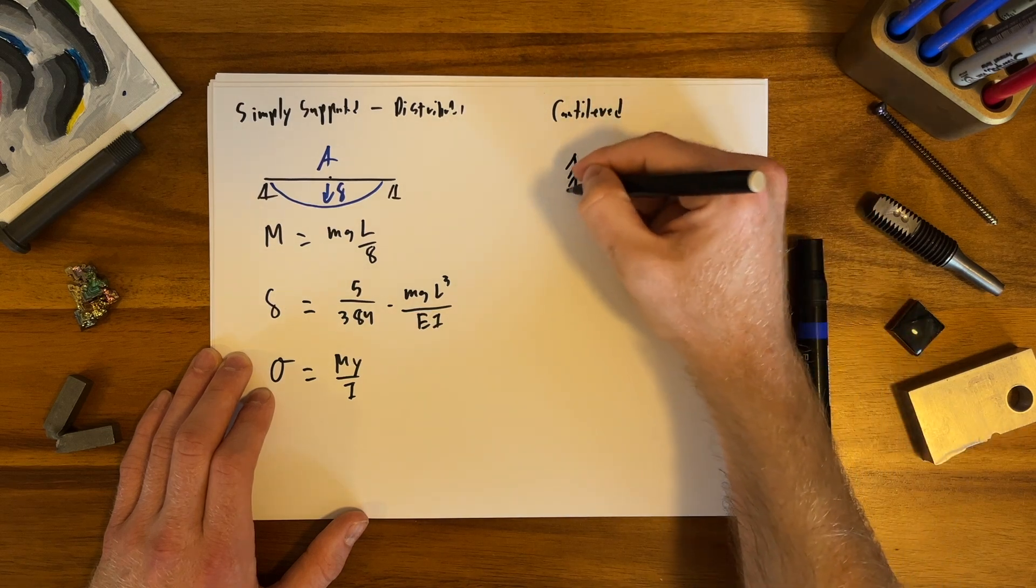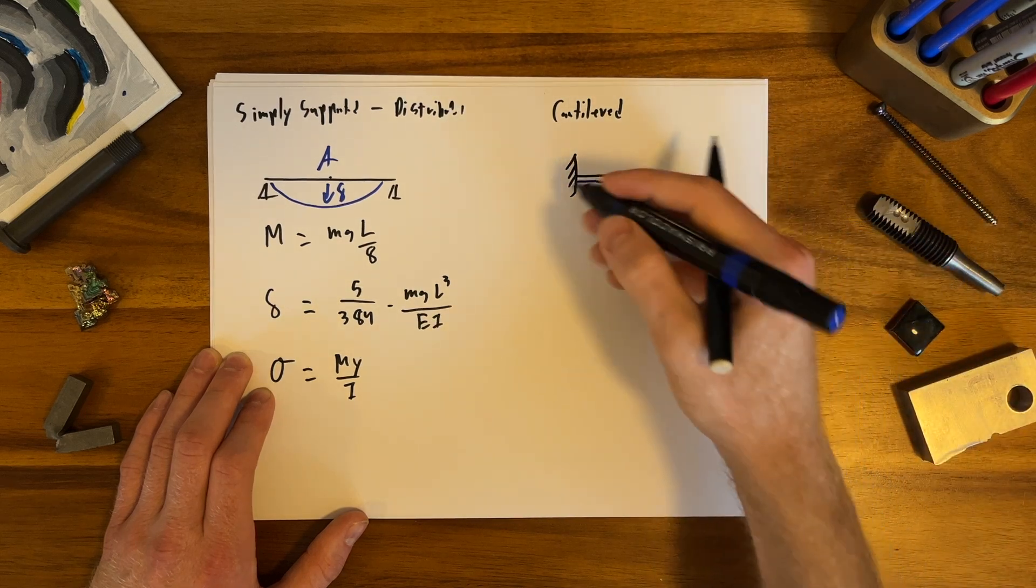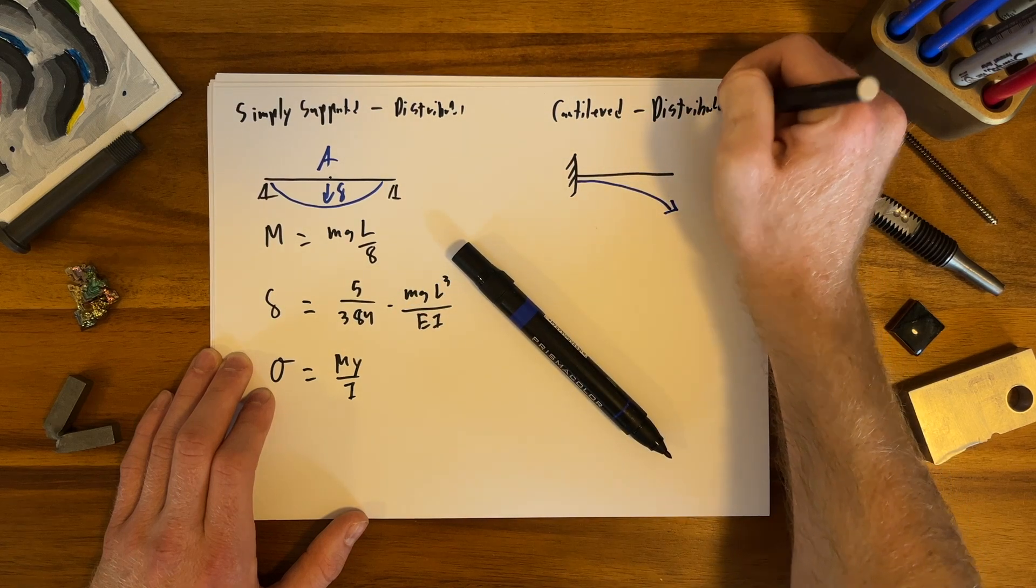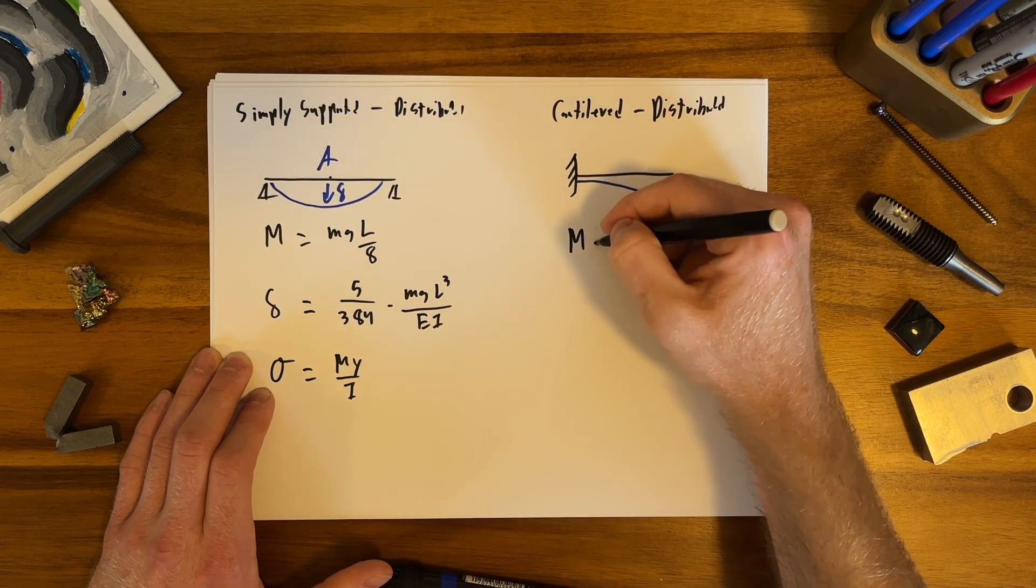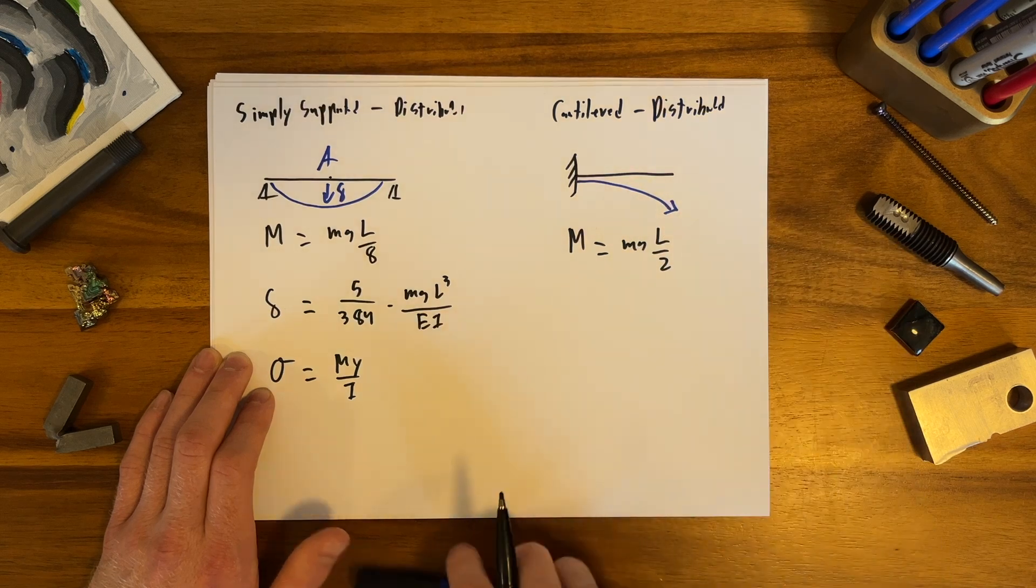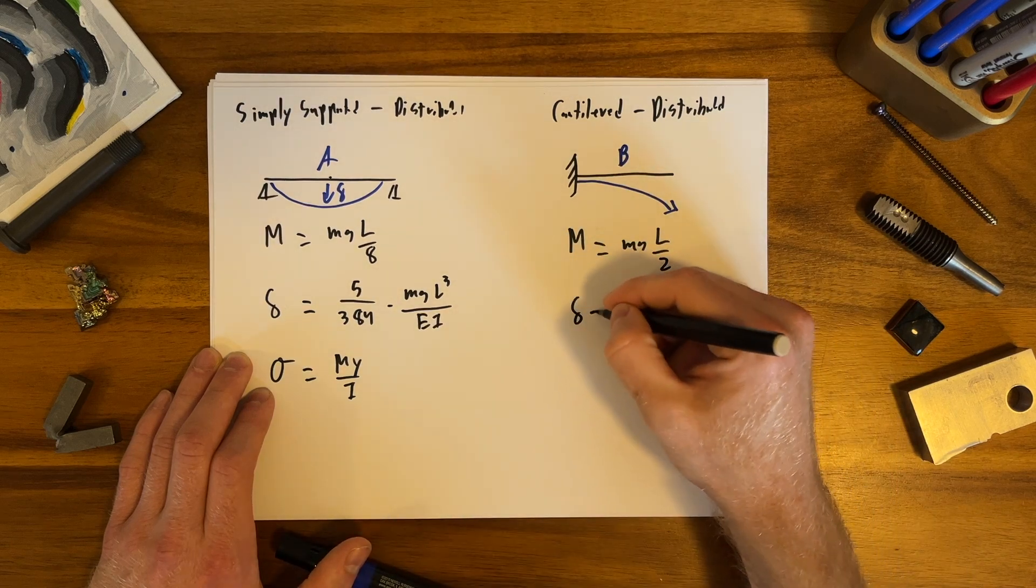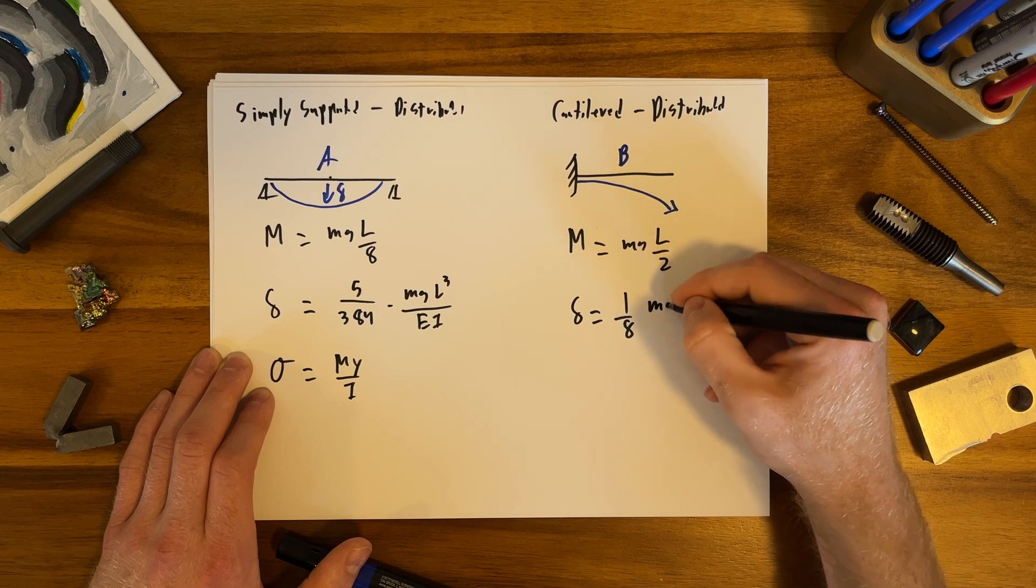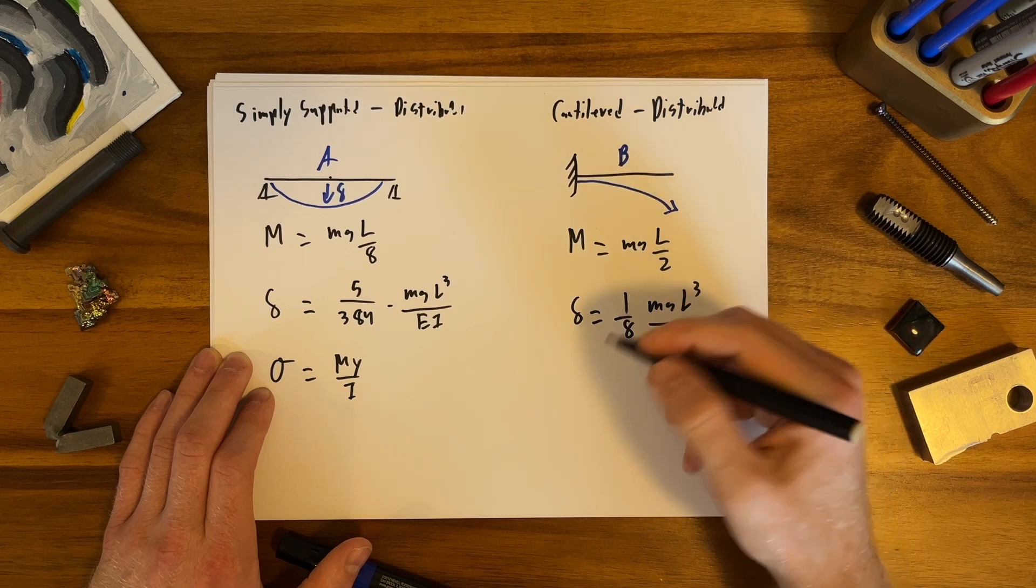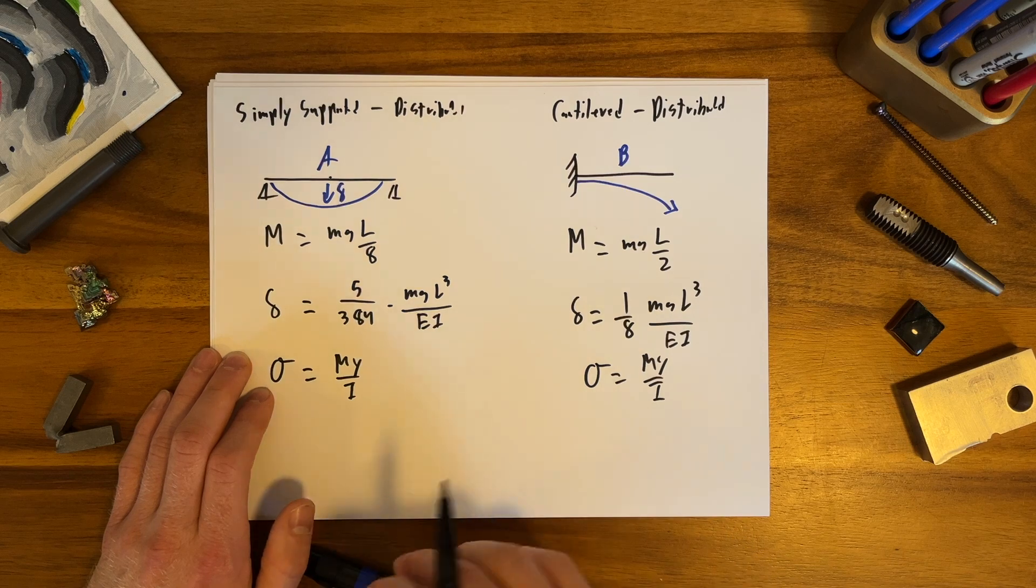In that case, the deflection looks something like this with a distributed load as well. The maximum moment is at the root and equals MgL over 2, where L is B because B is one-third L. Then the deflection is one-eighth MgL cubed over EI, again substituting B in for L. Stress still equals My over I.